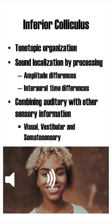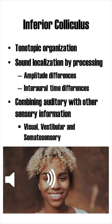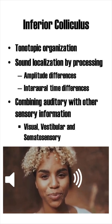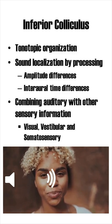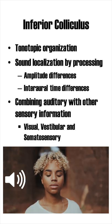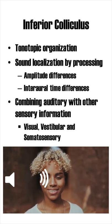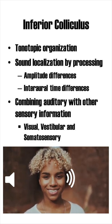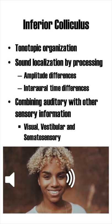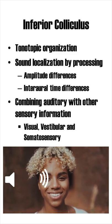Furthermore, the IC is crucial for sound localization. It uses amplitude differences resulting from the shape of our ears. It also uses timing differences in sound. For example, when a sound comes from the right, it first enters the right ear, and only then, a little bit later, the left ear. This is the so-called inter-aural time difference.